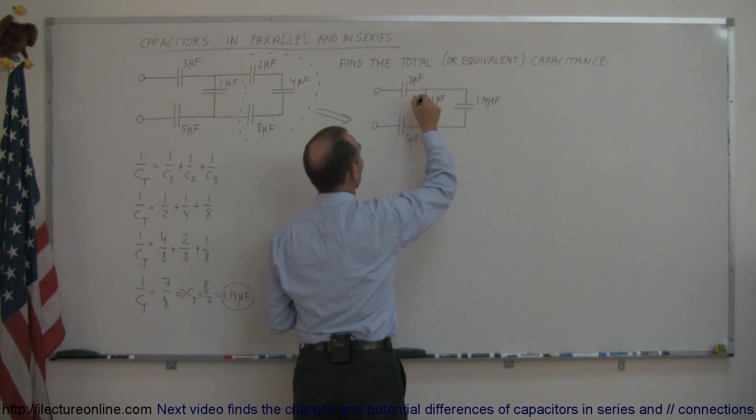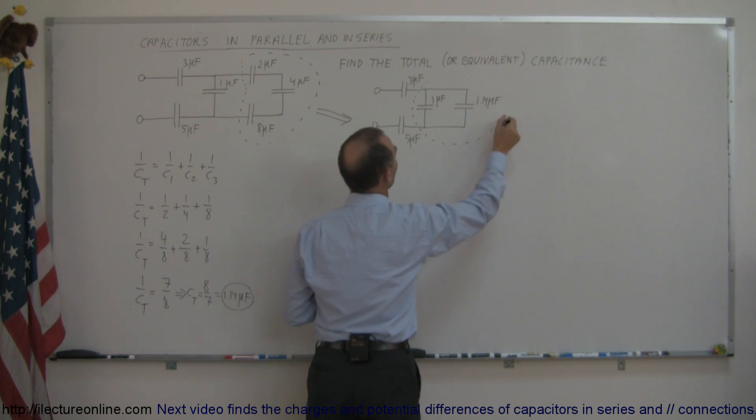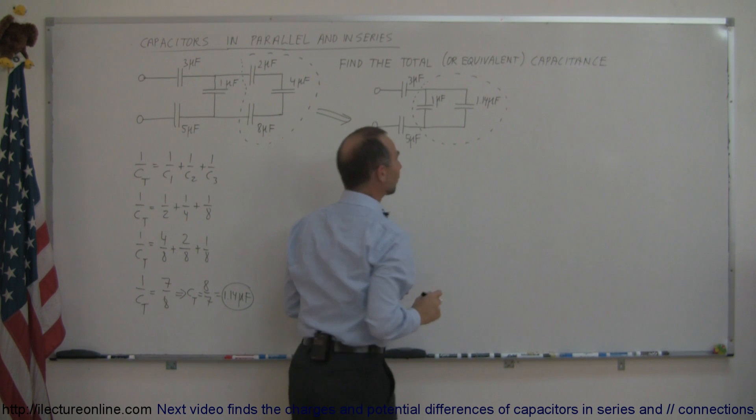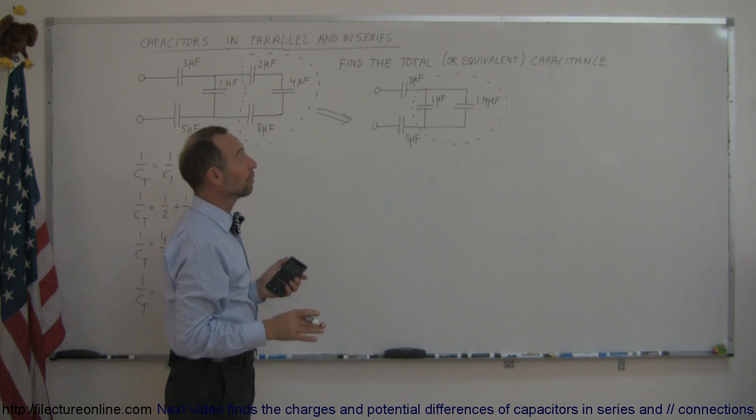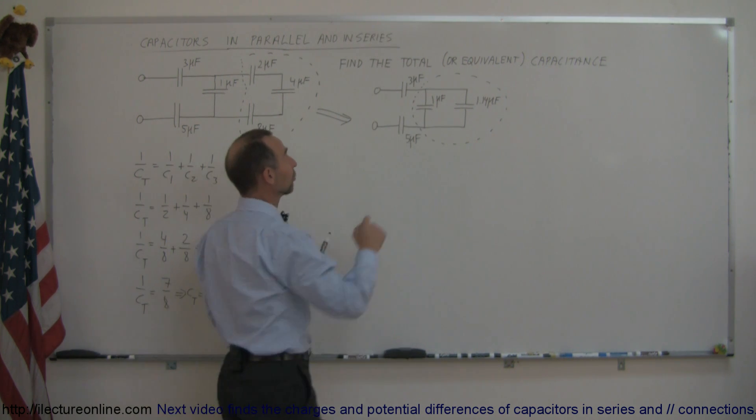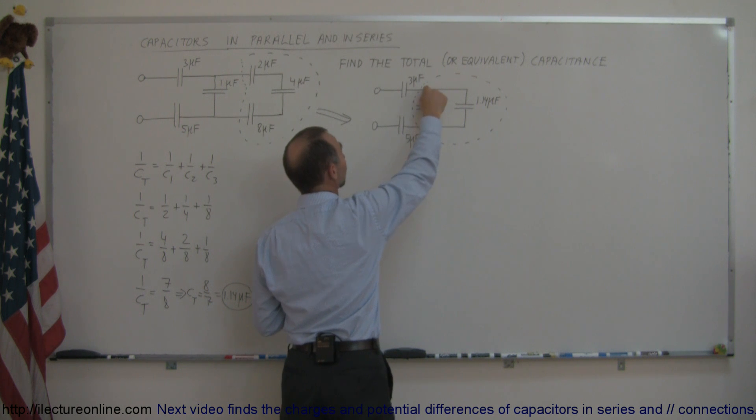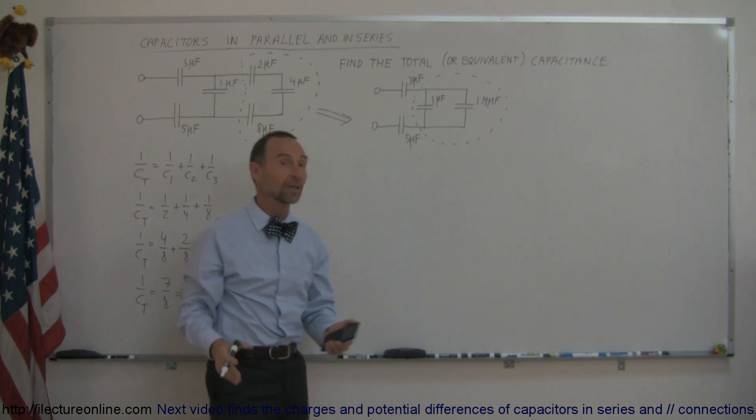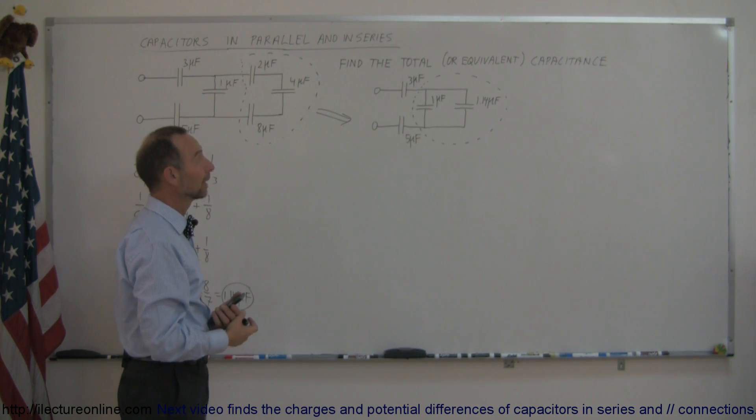If we take a look at these two capacitors, they're actually connected in parallel. From this junction you can either go this way or that way to get to this junction, which means you have a choice. Two paths means they're in parallel.